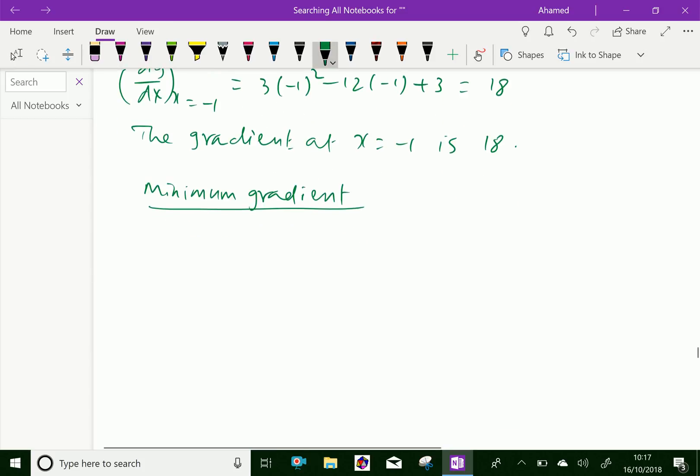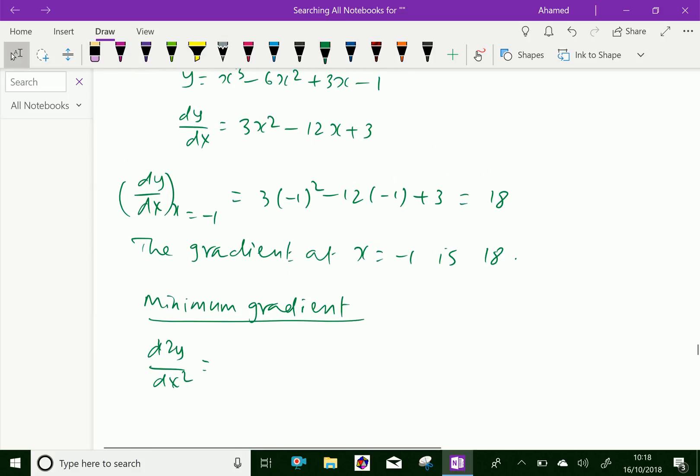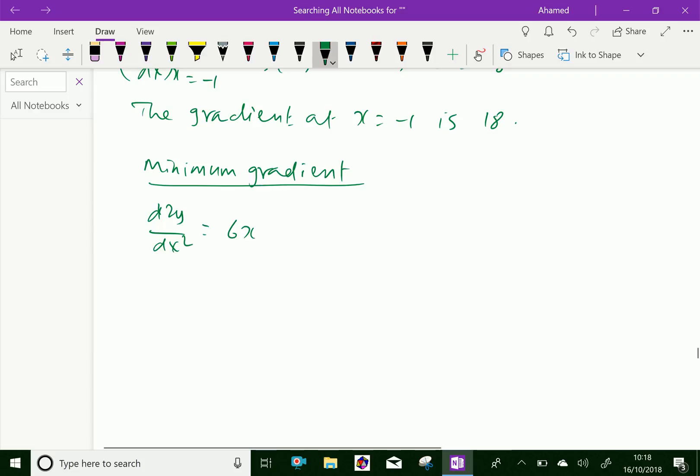Now, for that purpose, we have to find d²y/dx² = 6x - 12, put equal to 0, which gives x = 2.